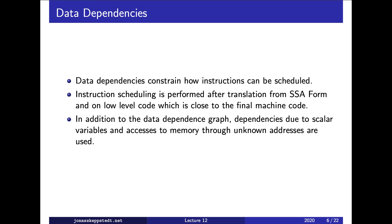Dependencies limit how an instruction scheduler can schedule instructions, which is quite obvious. Instruction scheduling is performed after translation from SSA form, since we don't want to have phi functions which would not correspond to a machine instruction. We want to have as low-level a representation as possible so that the instructions being scheduled are machine instructions, although with symbolic registers as operands, since we do register allocation after the first instruction schedule.